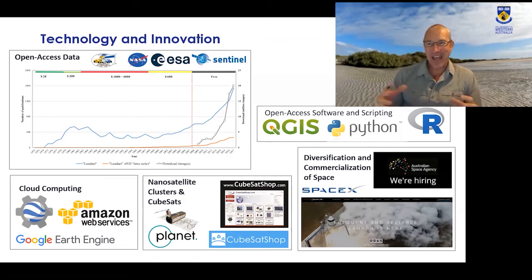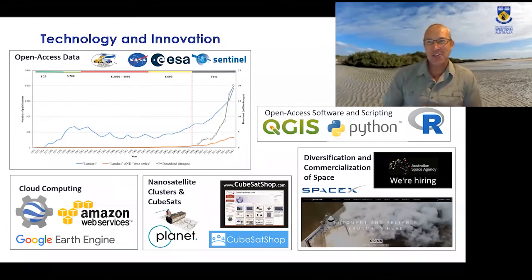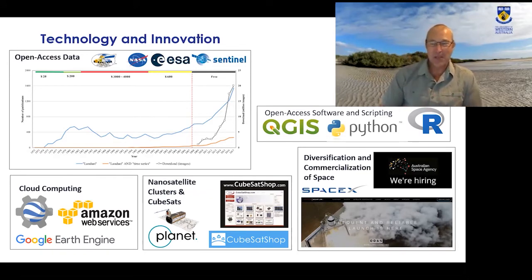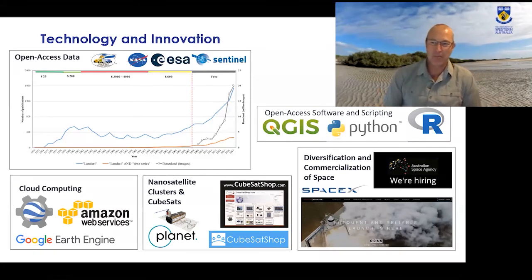You can now go online, design and get built your own nano-satellite, and then book a launch with a provider like Rocket Lab in New Zealand to put it into space. For about 100–150 thousand Australian dollars, you can launch your own satellite now — a capability that wasn't even dreamed of until recently.